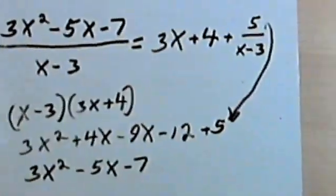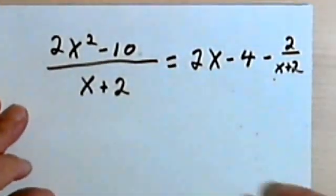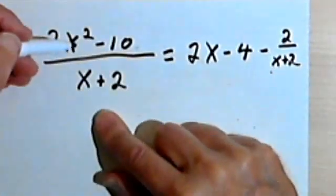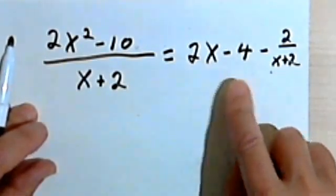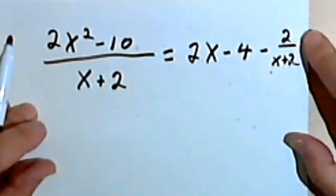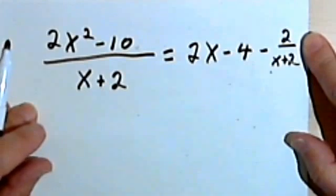Let's look at the other problem we did on the last video. So in this one we had 2x squared minus 10 divided by x plus 2. And the answer we got was 2x minus 4 minus the fraction 2 over x plus 2.